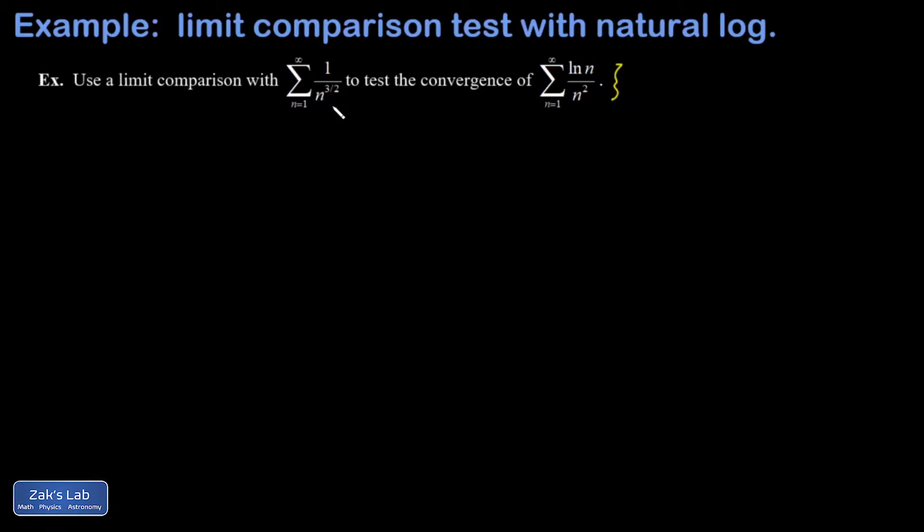Now the reason we're choosing the comparison with n to the three halves is because something goes wrong if you try to compare to 1 over n squared. So when I do the limit comparison to that convergent p-series, 1 over n squared, my n squareds are going to cancel out and I end up with the limit as n goes to infinity of natural log n, which is infinity.